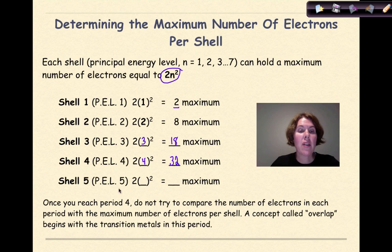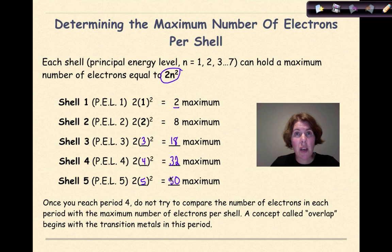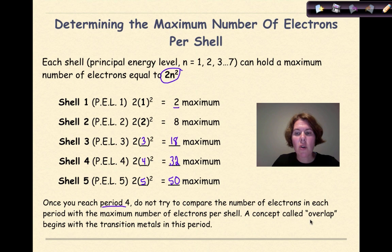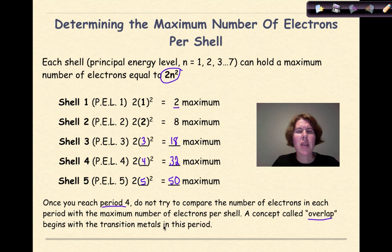And shell 5: 5 squared is 25 times 2 is 50. Now one thing you need to realize is that once you reach period 4, do not try to compare the number of electrons in each period with the maximum number of electrons per shell. We get into this concept called overlap, which if you take honors chemistry or AP chemistry, your teacher will address. That deals primarily with the behavior of electrons with transition metals.